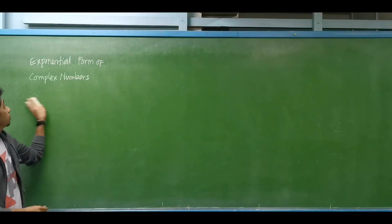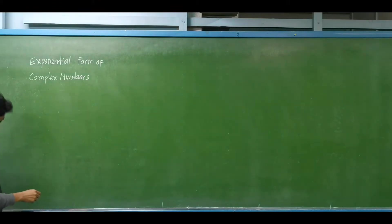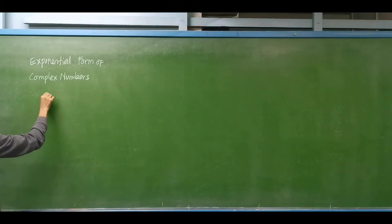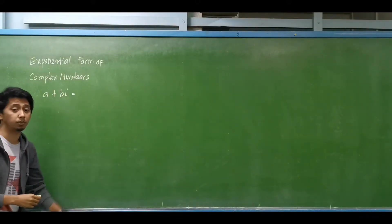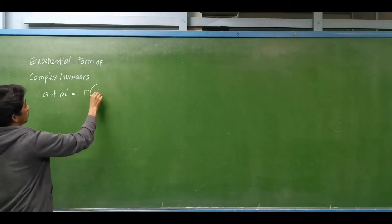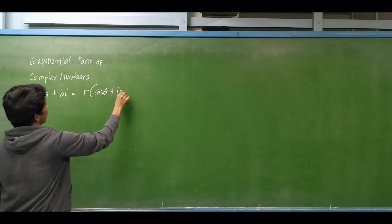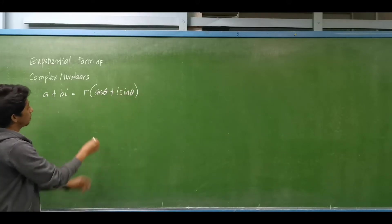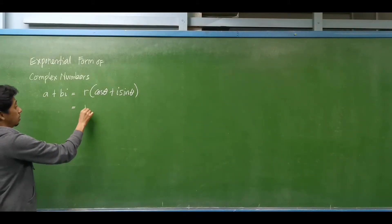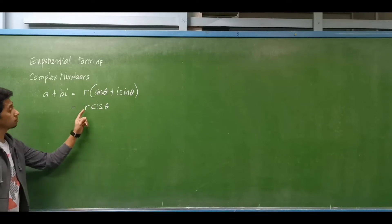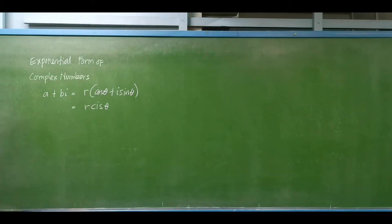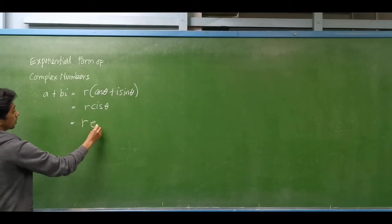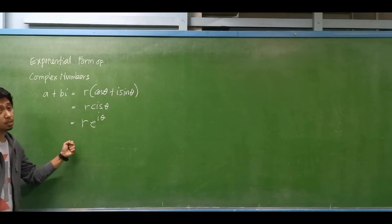Today we are going to discuss the exponential form of complex numbers. We have the rectangular form, that is A plus iB. If we convert this to trigonometric or polar form, that is R multiplied by the quantity cosine theta plus i sine theta, sometimes abbreviated as R·CIS(θ). The equivalent in exponential form is the modulus E raised to i times theta.